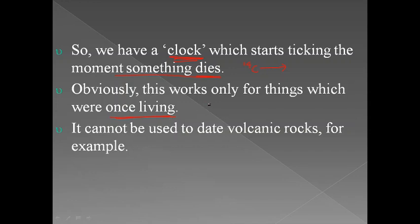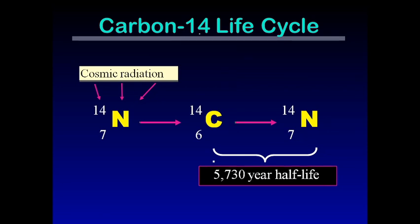This carbon is taken up only by living beings — plants consume carbon dioxide, and those living beings that consume plants or take CO2 directly from the atmosphere can have this clock. It cannot be used to date volcanic rocks, for example, because they are not taking up carbon dioxide from the atmosphere. There are other techniques to measure the age of volcanic rocks. Cosmic radiation induces the change of N-14 into C-14, the radioactive carbon isotope, which slowly decays back into N-14.